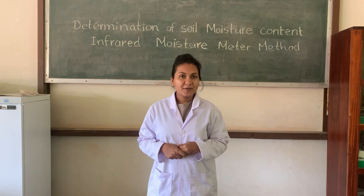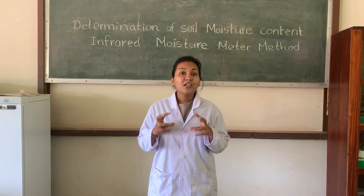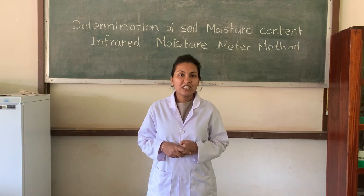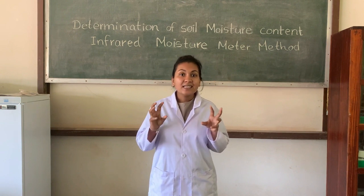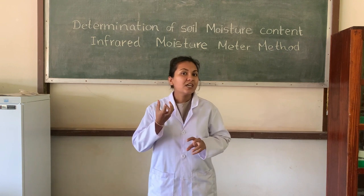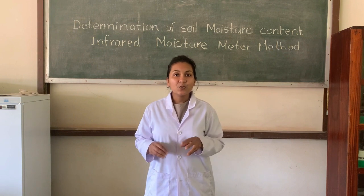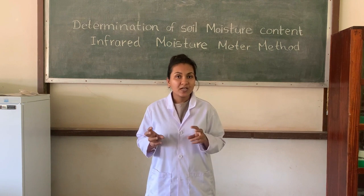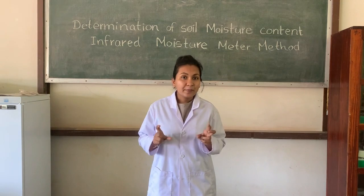Let's move to the infrared moisture meter method. As the name implies, here we are using an infrared meter to determine the moisture content. The infrared moisture meter contains an infrared bulb which produces infrared radiation. This radiation helps to dry the soil sample — that means to evaporate the moisture in the soil sample. It also contains a balance so we can take the direct reading of soil moisture loss from 0 to 100. This is an accurate, direct, and rapid method.